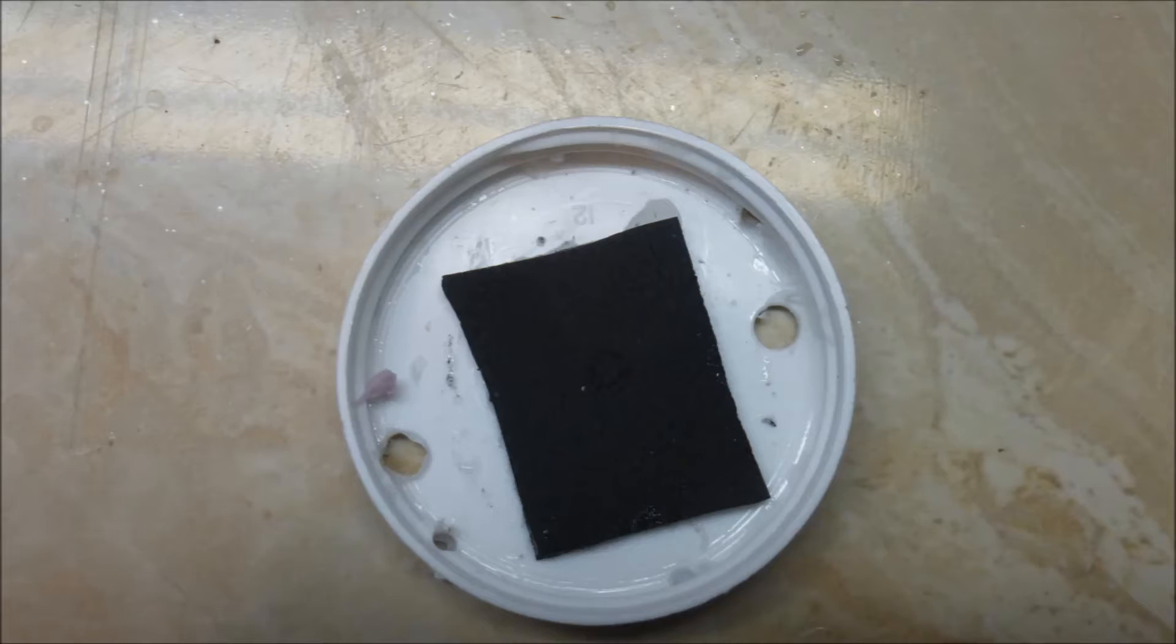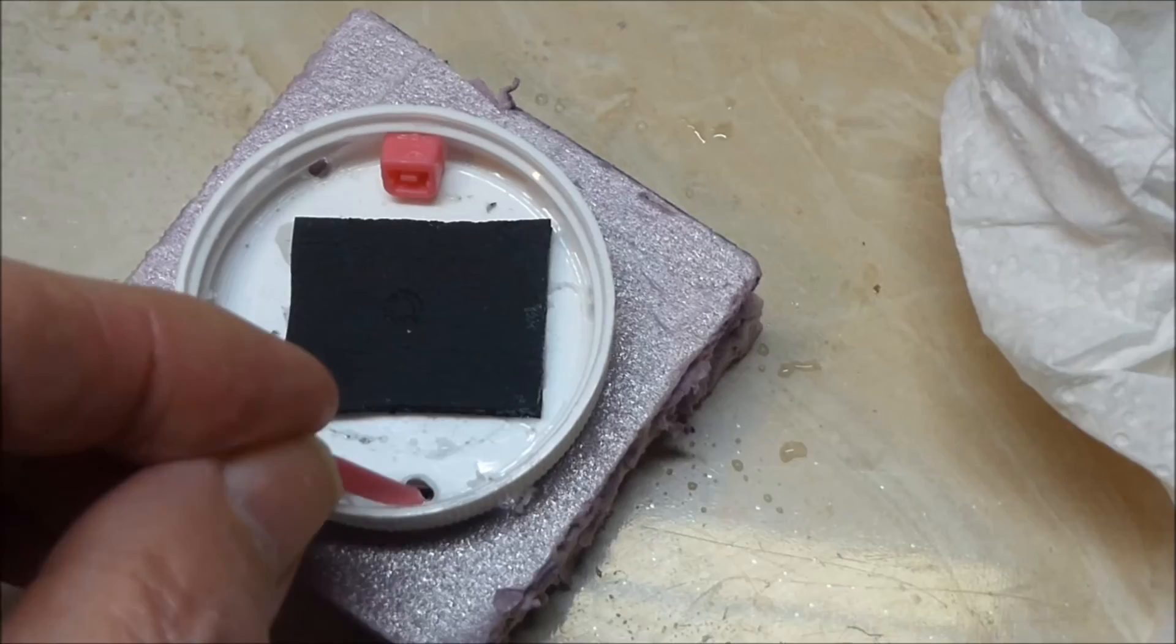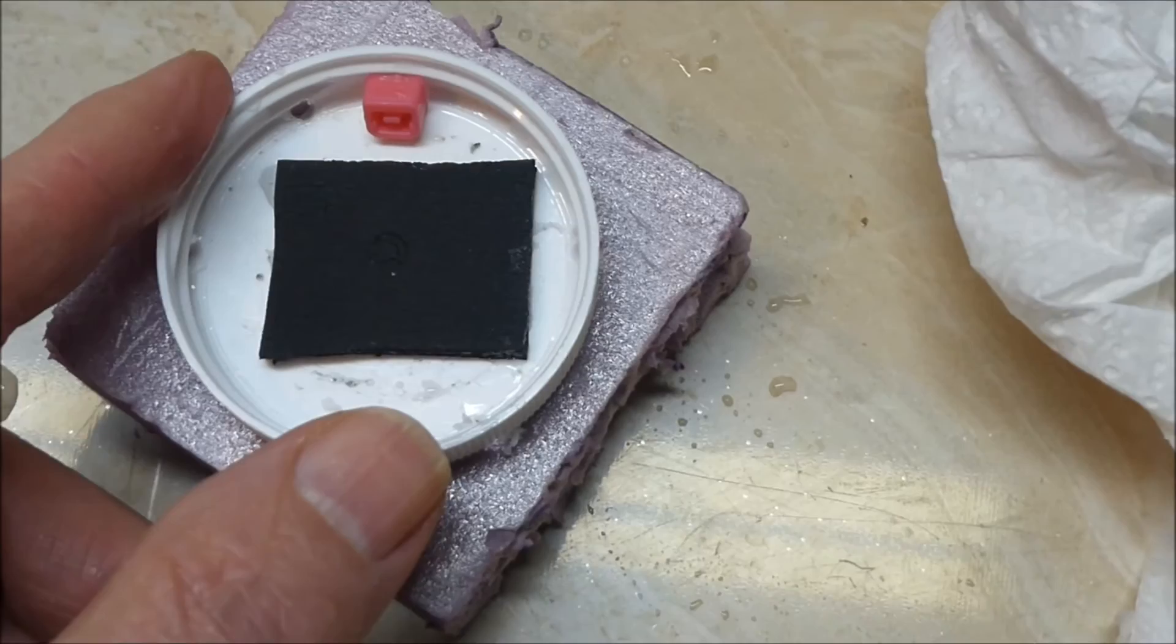The bottle cap is fastened to a two and three-quarter inch square of one inch thick extruded polystyrene with two small lengths of plastic cable tie. The extruded polystyrene will provide over 100 grams of buoyancy force.